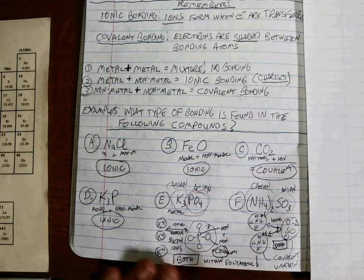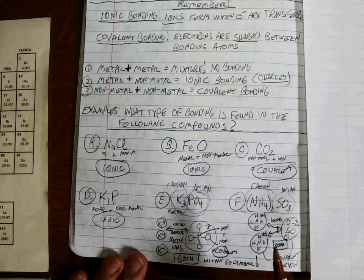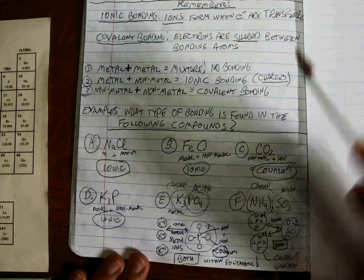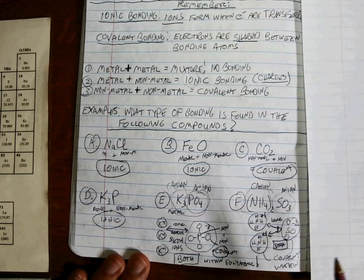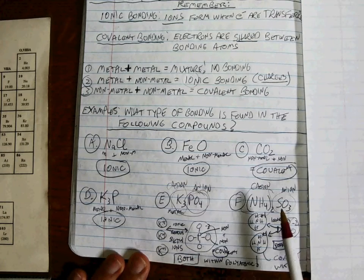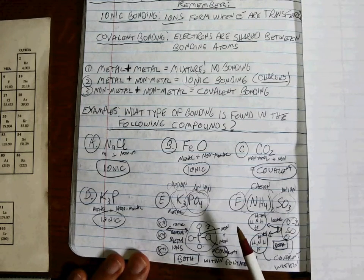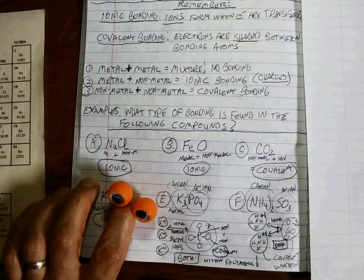My suggestion is to go back to all the ions and compounds you've looked at all the way through chapter three. Figure out what the charges are on everything, and be able to decide the kind of bonding that goes on in all of them. Good luck — have at it.